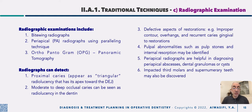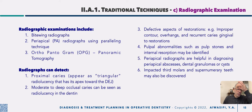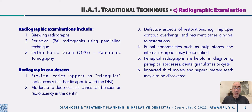Radiographs can detect proximal caries lesions, which appear as a triangular radiolucent area with its apex towards the dentino-enamel junction. They are also used for moderate to deep occlusal caries, which appear as radiolucency in dentine. Radiographs can detect defective aspects of restorations such as improper contour, overhanging margins, and recurrent caries at gingival inaccessible areas. Pulp abnormalities such as pulp stones and internal resorption may also be identified.